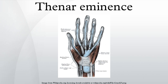Opponens pollicis lies deep to abductor pollicis brevis. As its name suggests, it opposes the thumb, bringing it against the fingers. This is a very important movement, as most of human hand dexterity comes from this action.